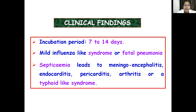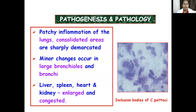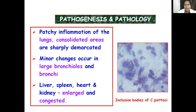The incubation period is roughly 10 days, varying from 7 to 14 days. Infection ranges from mild influenza-like symptoms to fatal pneumonia. Psittacosis is usually a septicemic condition which may lead to meningoencephalitis, endocarditis, pericarditis, arthritis, or typhoid-like syndromes. Pathologically, we see patchy inflammation of the lungs with consolidated areas sharply demarcated, minor changes in large bronchioles and bronchi, and enlarged and congested liver, spleen, heart, and kidney.